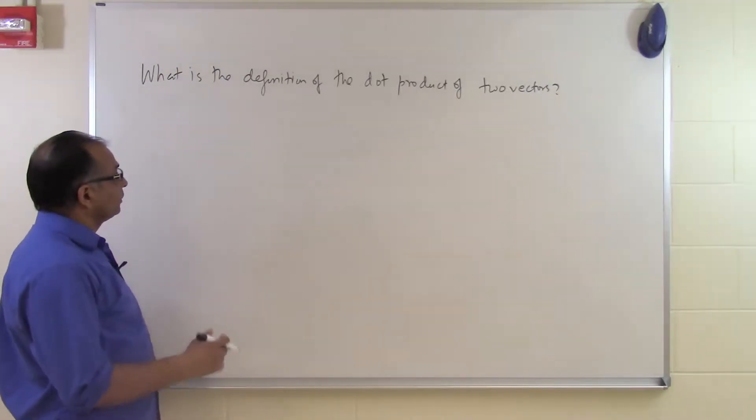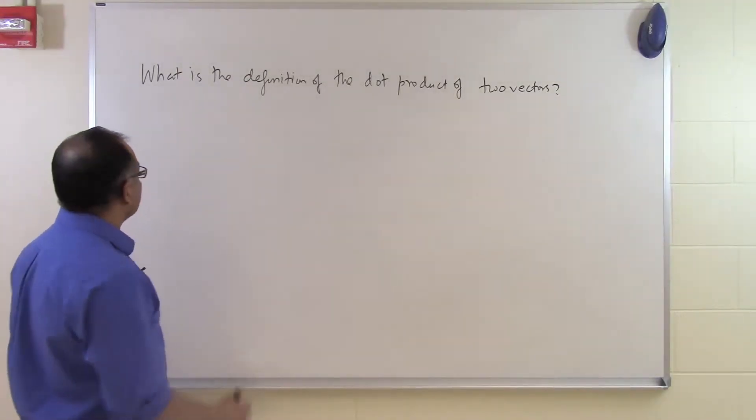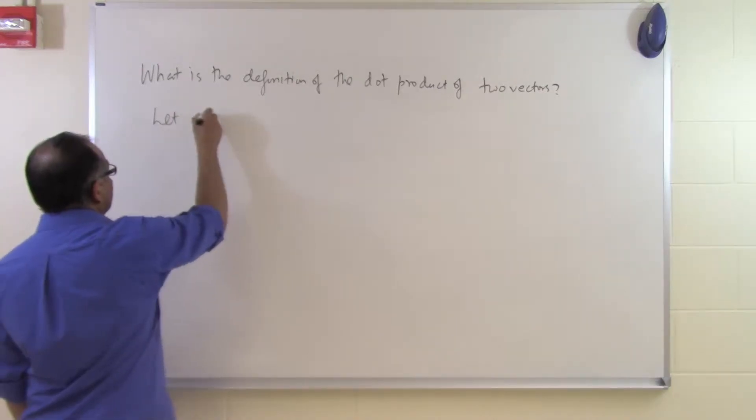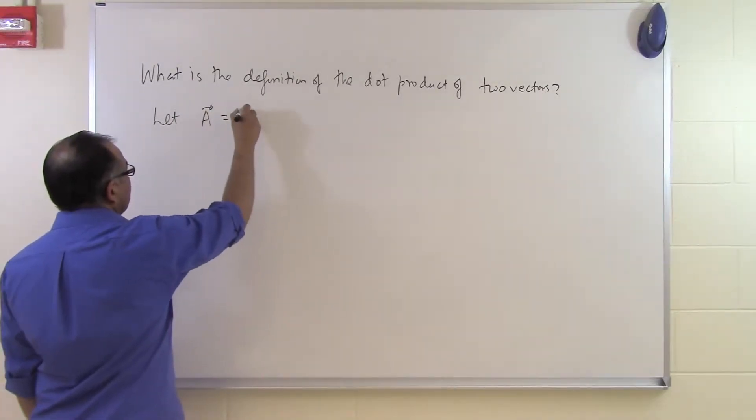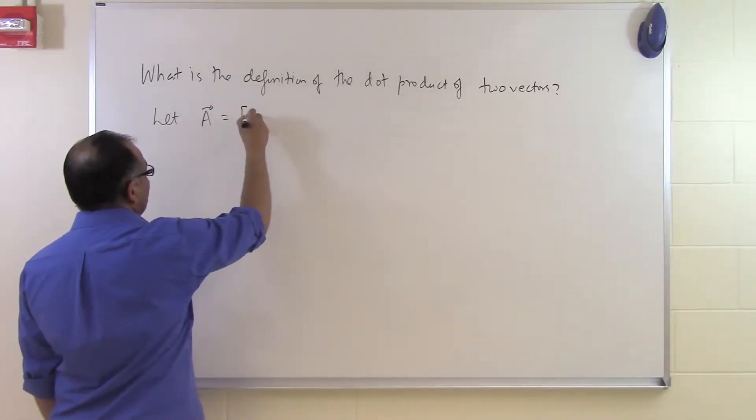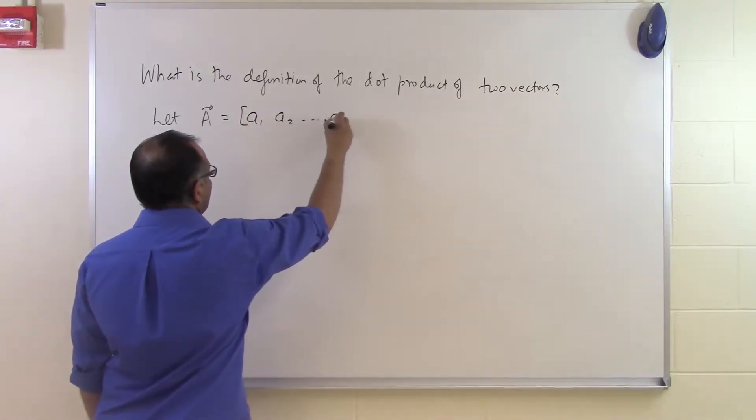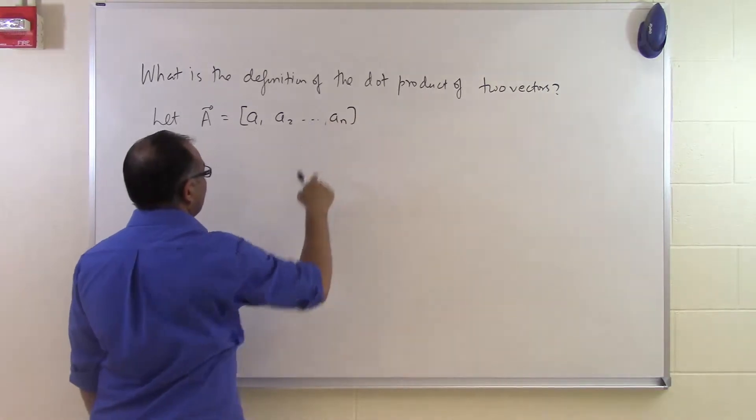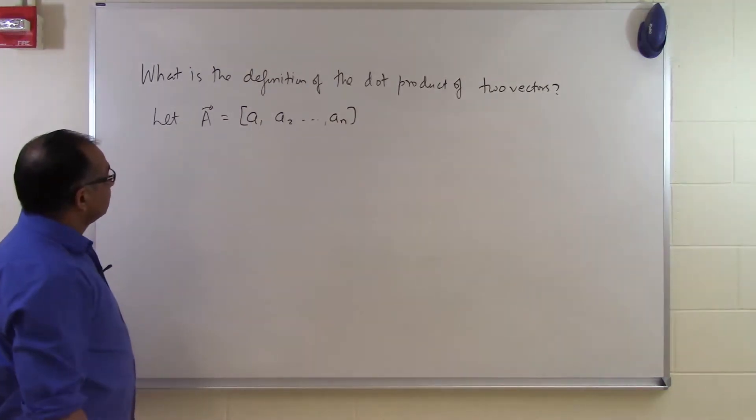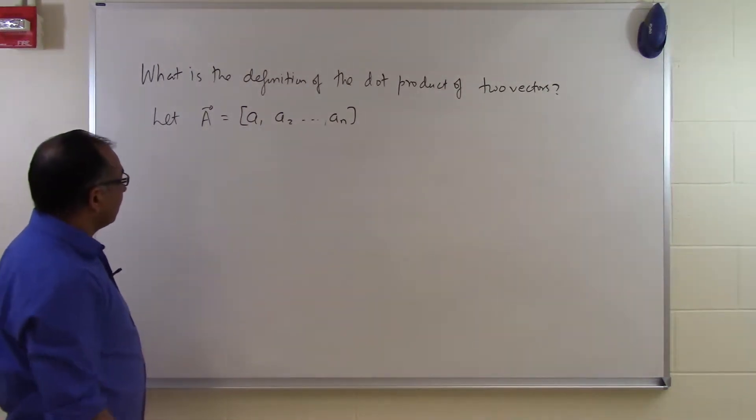In this segment, we'll talk about the definition of the dot product of two vectors. Let A be a vector with components a1, a2, all the way up to an. So we have n components, or an n-dimensional vector A.